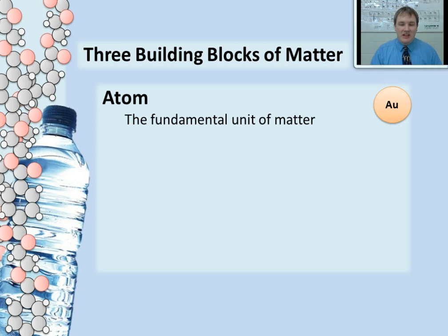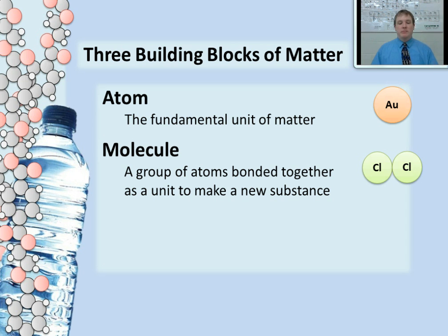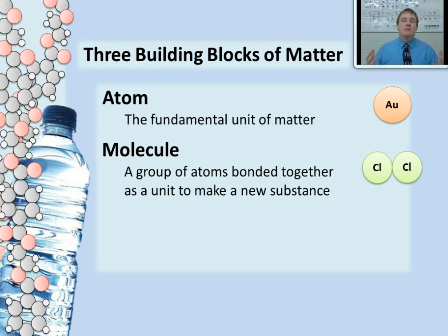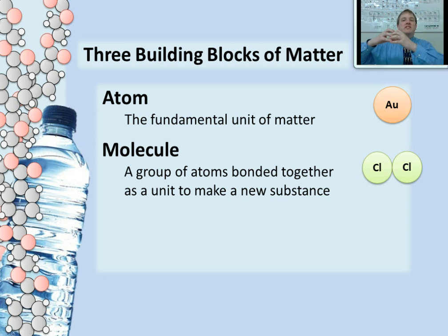When we combine atoms together and bond them together, we make another building block known as a molecule. A molecule is simply a group of atoms that are bonded together as a unit to make a new substance. Here I have pictured for you a chlorine molecule. When I show you a molecule in this class, I'll have atoms that are touching and even overlapping a little bit, because in real life those atoms are actually overlapping. The reason molecules form is because atoms share their electrons with each other, so the atoms actually do physically overlap, and that's what's happening with this chlorine molecule.